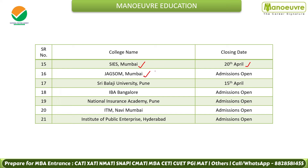Then we have Chetana's Institute of Management in Mumbai — admission open. If you are in the Pune region, Sri Balaji University — last date is 15th April, so fill up the form quickly. IBA in Bangalore — admission open. NIA Pune — another good campus, admission is open. ITM Navi Mumbai — open. And IPE Hyderabad — Institute of Public Enterprise — is open. So you can target 21 colleges in total, all currently open.